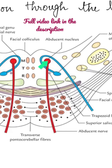The abducens nerve nucleus lies beneath the facial colliculus in the floor of the fourth ventricle, just lateral to the medial longitudinal bundle.